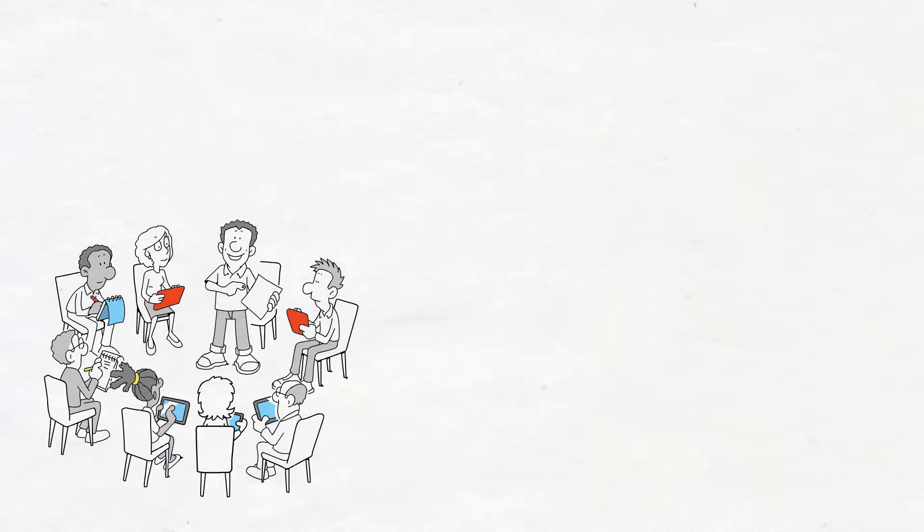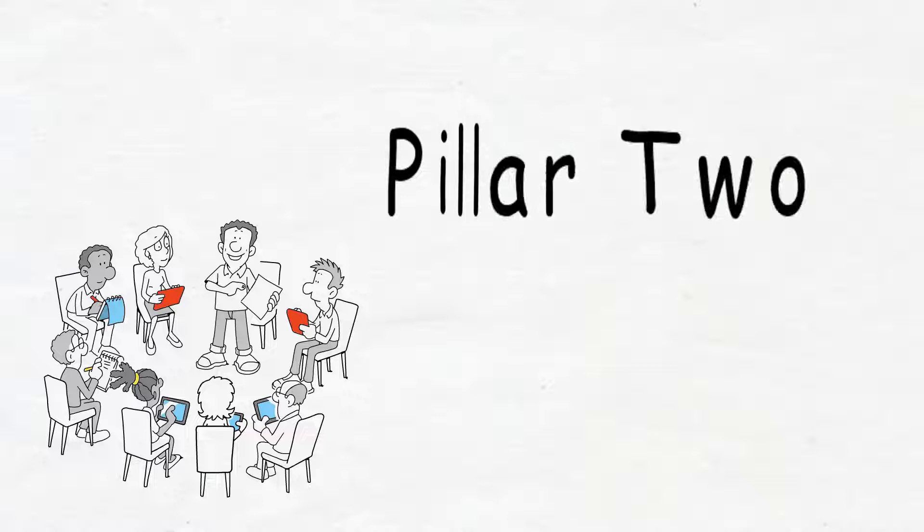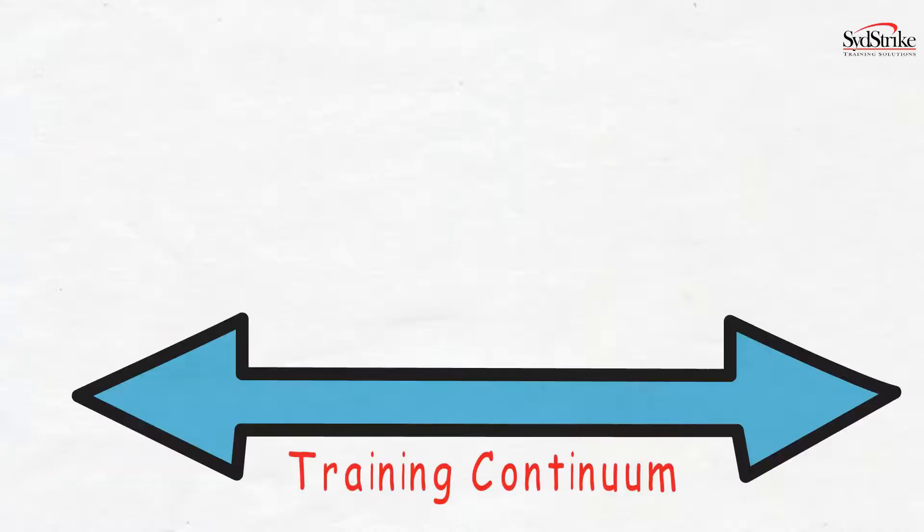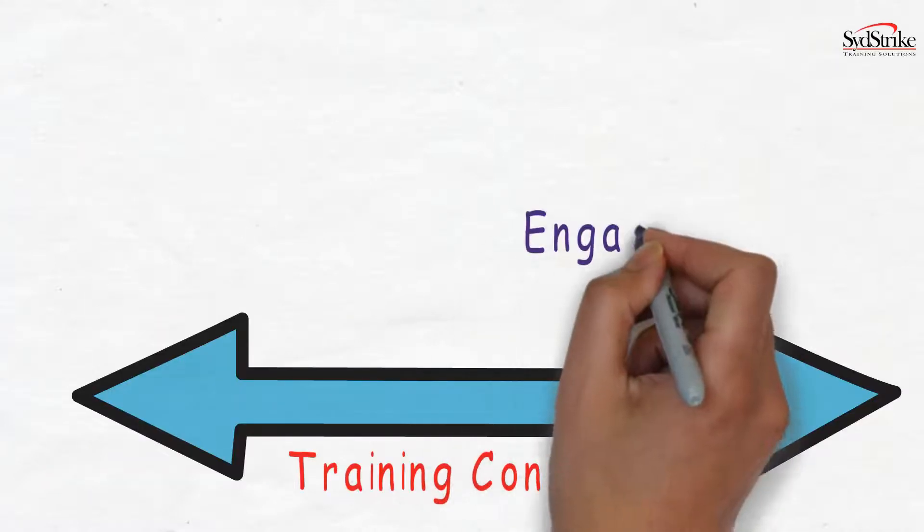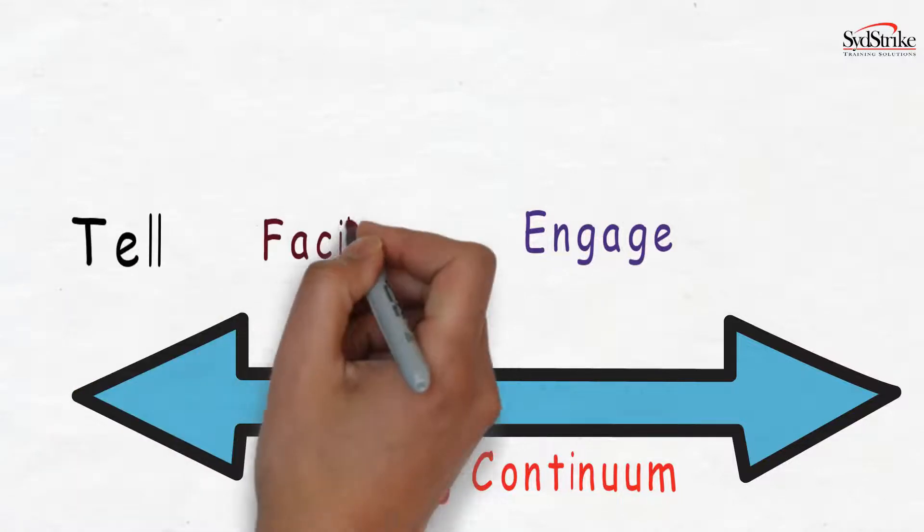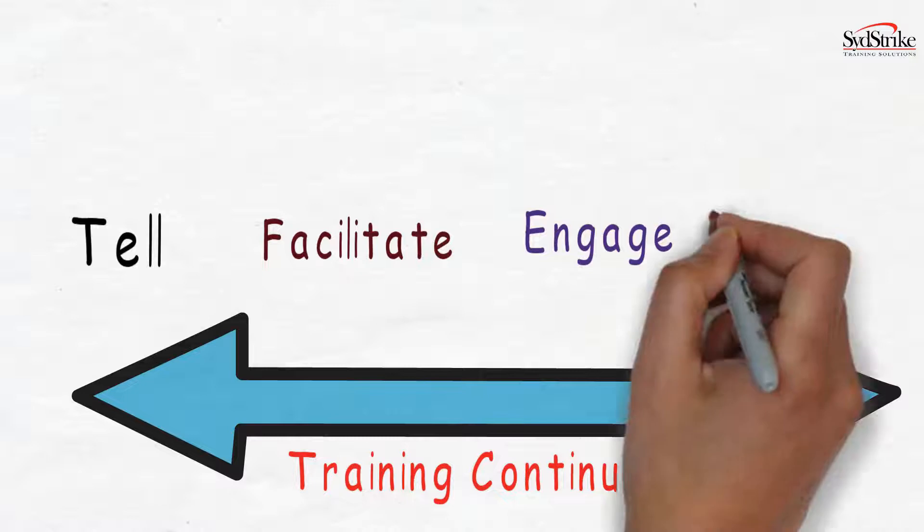Now we have the objectives in place, what about the delivery of your training? This is pillar two, engaging training delivery. Make your training engaging. Involve your group members. Try and keep away from the tell end of the trainer continuum and move more to the engaging and empowering end.